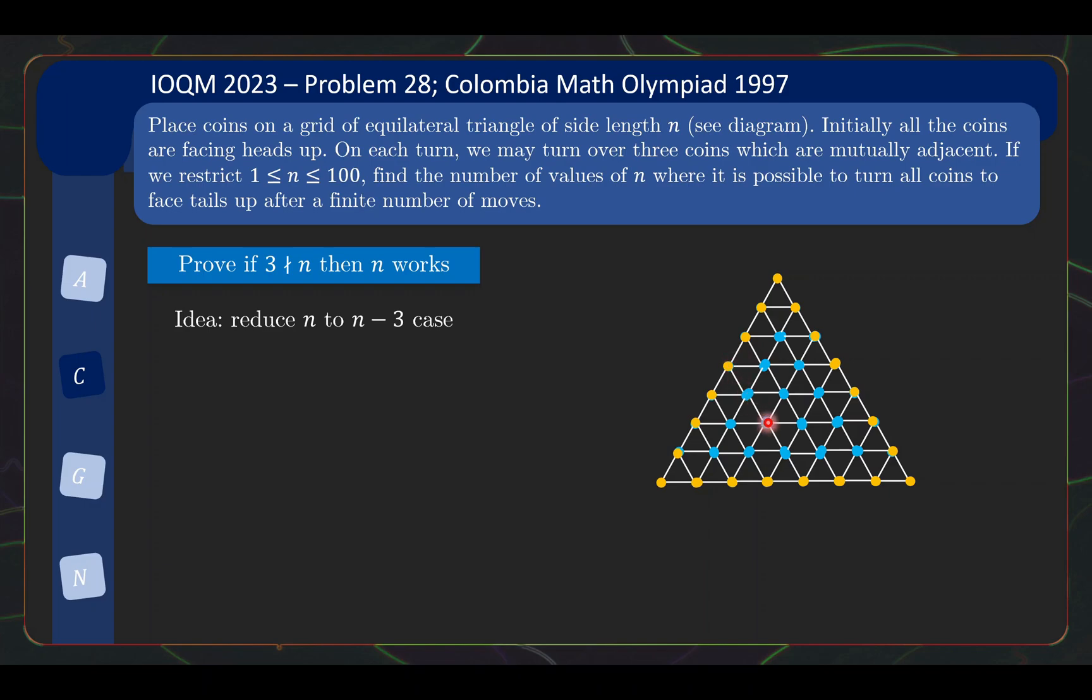Whereas for any of the interior coins, they will be flipped 6 times because there are 6 triangles incident with it. So this means that after we perform that first step, we will be in a scenario like this. And what is the size of the interior triangle? Well, this turns out to have size n minus 3.